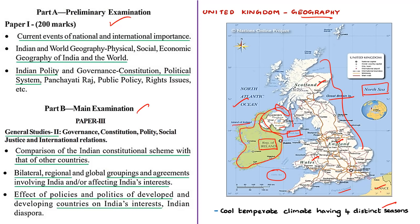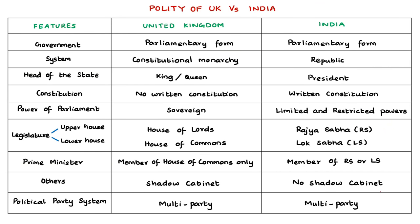Now let us look at the polity of Britain in comparison with India. Both UK and India have a parliamentary form of government. India is a republican country whereas Britain is a constitutional monarchy. The head of state in India is the President, whereas in UK it is the King or Queen, who enjoys a hereditary position. UK has no written constitution, but India has a written constitution. The UK Parliament is sovereign, whereas the Indian Parliament enjoys limited and restricted powers as per the Indian constitution. The British Parliament has two houses: the upper house called the House of Lords and the lower house known as the House of Commons.